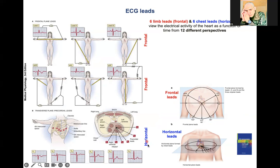Then we have the horizontal leads, V1 to V6. These leads are looking at the electrical activity of the heart from 6 horizontal perspectives. More details will follow.